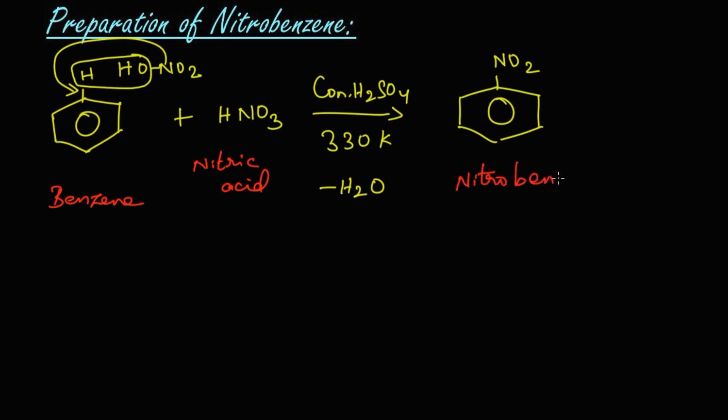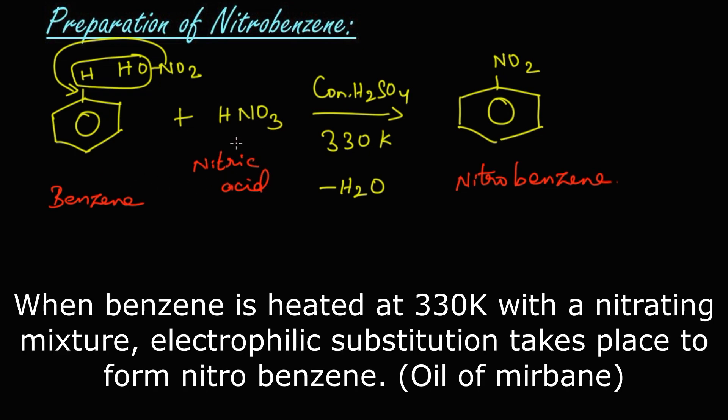Let's summarize the reaction now. When benzene is nitrated with a nitrating mixture, that is concentrated nitric acid and concentrated sulfuric acid at the temperature of 330 Kelvin, electrophilic substitution takes place and we get nitrobenzene as the product. Thank you.